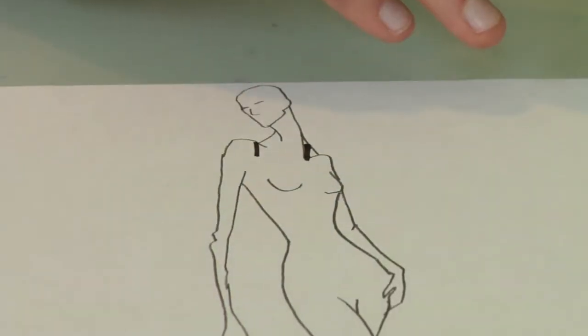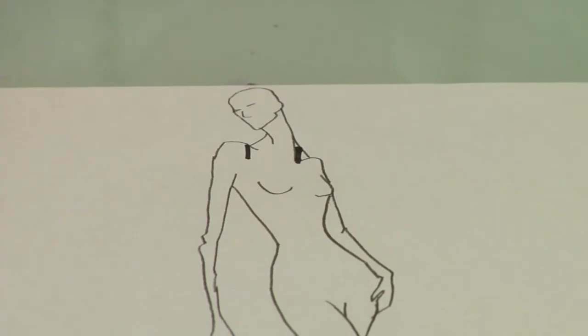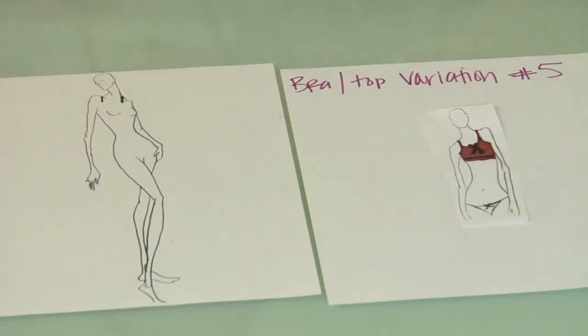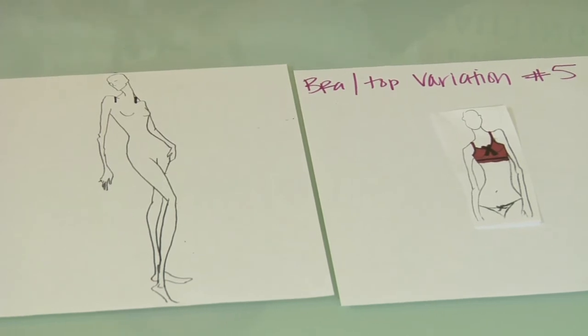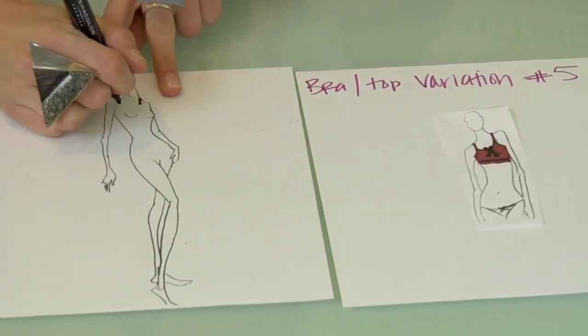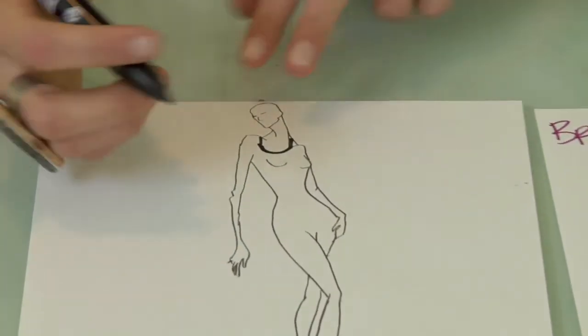Then decide where you want the neckline to fall. And since it is camisole inspired, it's going to be a little bit higher. We're not going to go down in between the boobs on this one like a regular bra. It's more of a shirt, like an undershirt. A little girl undershirt is what this is inspired by.